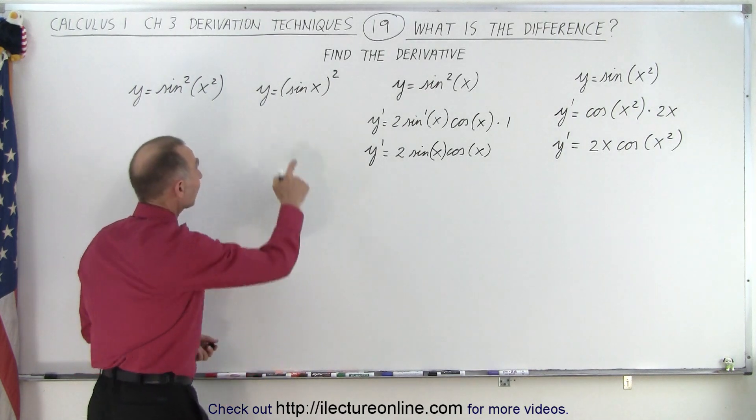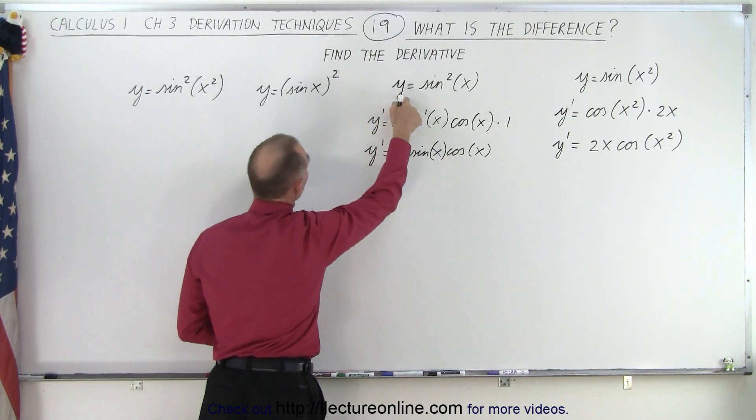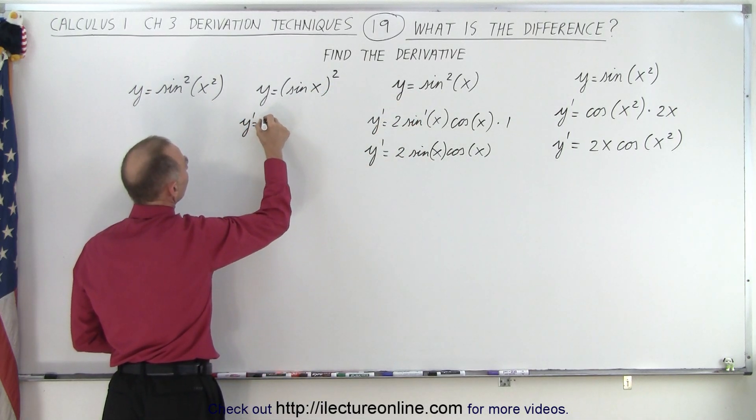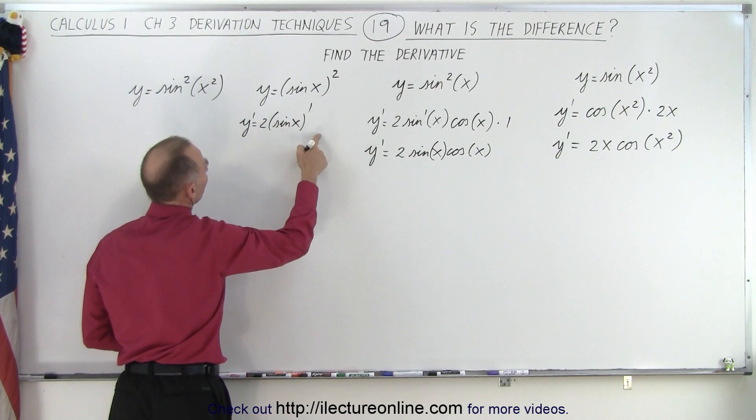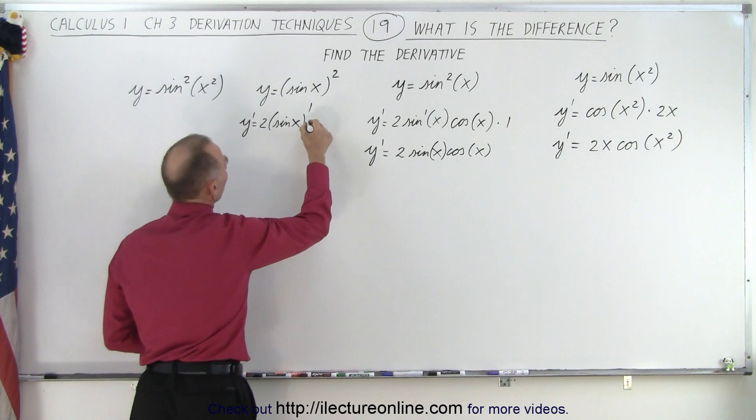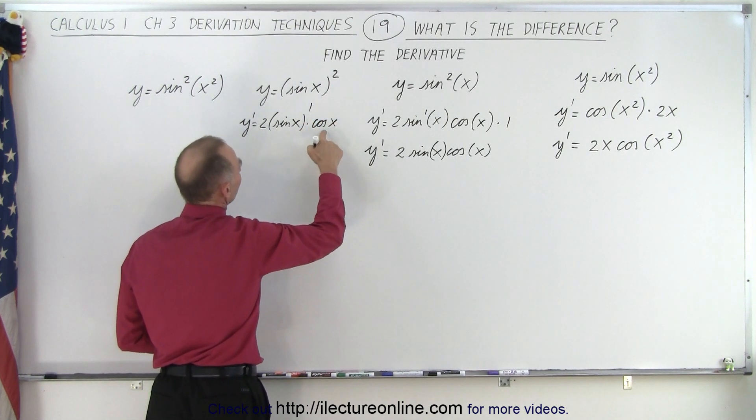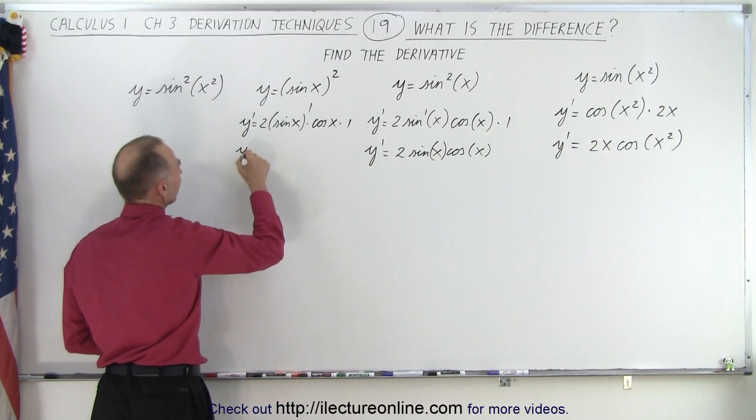All right, so what do we do when we have this? Well, essentially, there is no mathematical difference between these two. So again, what we do is we get y prime is equal to 2 times the sine of x to the first power times the derivative of what's inside, which is times the cosine of x times the derivative of the cosine of x, which is times 1. And so you can see we get the exact same thing.